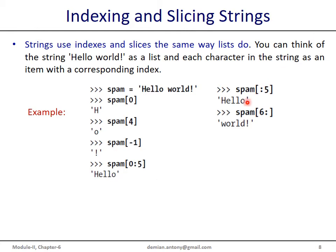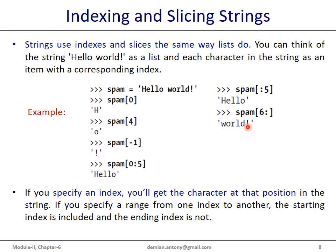We can omit the first index while using the slice operator, which gives all characters from the beginning up to the fourth element. Omitting the end index gives all characters from a given position to the end of the string — for example, starting from index 6 returns 'world'. If you specify a single integer value, it is an index and returns the character at that position. If you specify a range with a first and second index separated by a colon, all characters from the first index up to but excluding the last index are returned.